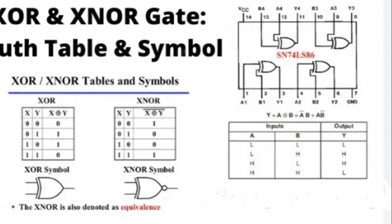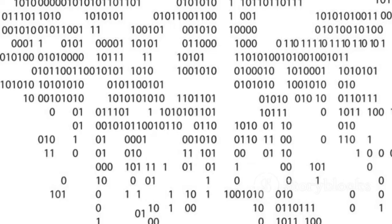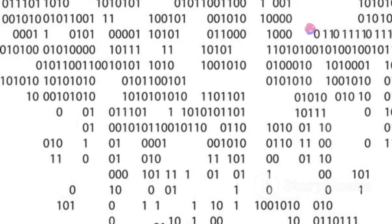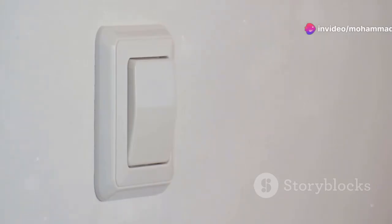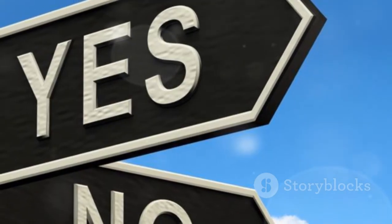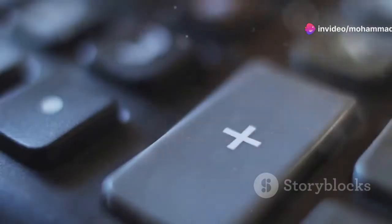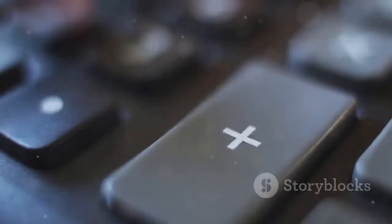Derived Logic Gates: XOR and XNOR. We have the XOR and XNOR gates. These are called derived gates because they can be created by combining the basic gates. The XOR gate, also known as the exclusive OR gate, outputs a 1 only if one input is 1 and the other is 0. Think of it like a light that only turns on if one switch is up and the other is down. The XNOR gate is the opposite. It outputs a 1 if both inputs are the same, either both 1 or both 0. XOR and XNOR gates are often used in applications like error detection and data encryption. They can also be used to implement simple mathematical operations such as addition.